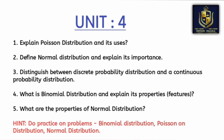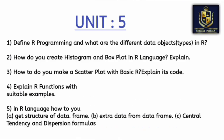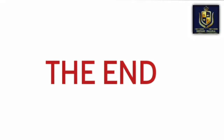Differences between normal distribution, discrete probability, and continuous probability are also important. From unit number five, define R programming and the different data types in R — this is very important and compulsory; we can expect this question this year. Whatever the question paper, you can write a similar answer and it will be correct. Histogram and box plot in R language, and what you know about scatter plot with basic R — these are the questions of unit number five.